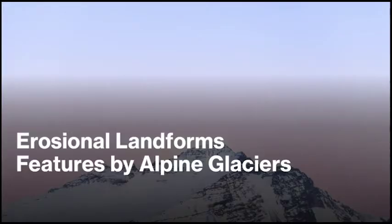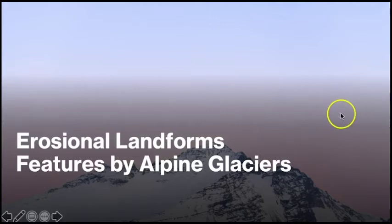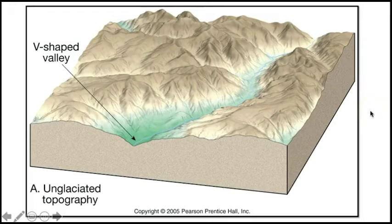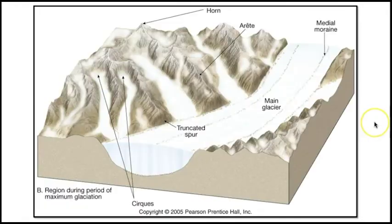Landform features formed by glacial erosion and deposition can be organized by the type of glacier that made them. We'll start with those formed through erosion by alpine glaciers. Preceding the Quaternary Ice Age, alpine regions contained well-defined V-shaped valleys. As the climate cooled into the Ice Age, winter snows persisted through the summer and snow began to accumulate at higher elevations. When these piles of snow became thick enough, they compacted under their own weight to form glacial ice, which then flowed downhill to create the erosional features we can observe today.